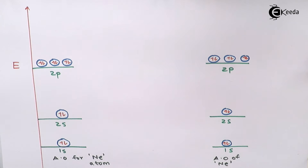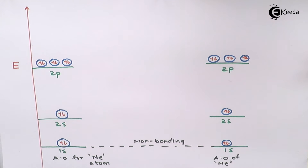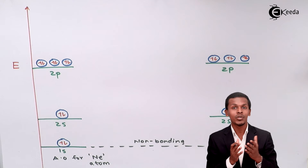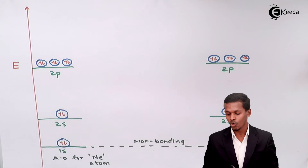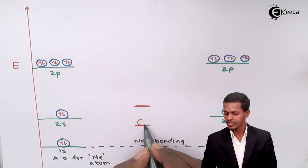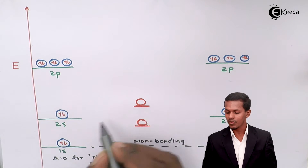For the 1s orbitals, as discussed in the previous lecture, they do not take part in any kind of bonding. So they represent a non-bonding energy level, also known as a non-bonding molecular orbital. For the 2s orbitals, they also do not form a bond, but when the two 2s orbitals come close together, they split into two energy levels — two molecular orbitals — which I am representing here.